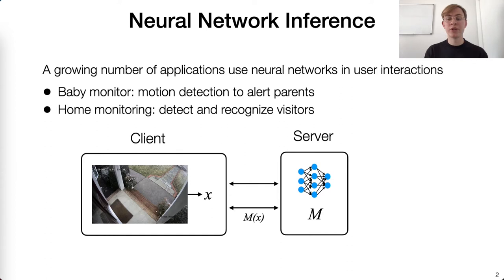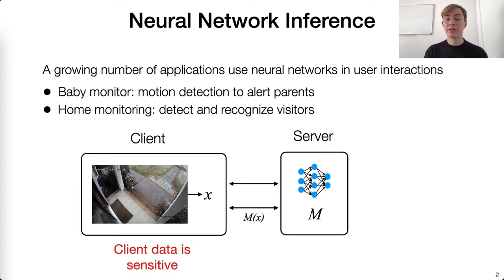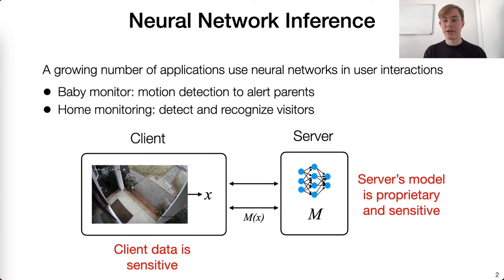In practice, inference is usually performed by having either the client send their query to the server who returns the prediction result, or by having the server give their model to the client who computes the inference locally. However, in many inference applications, both the client data and the server's model might be confidential. For instance, the camera records the faces of visitors, when homeowners come and leave the house, when packages arrive, etc. And the server's model is proprietary — the business might rely on having a closed source model, and this model may contain sensitive information from the training data. So ideally, we want an interaction that retains privacy for both parties.